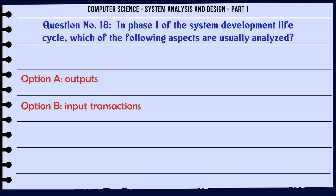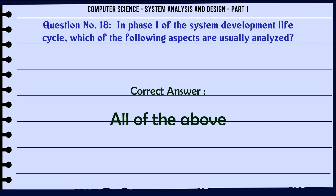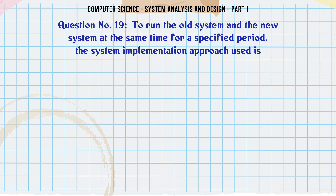In phase 1 of the system development life cycle, which of the following aspects are usually analyzed? A. Outputs. B. Input transactions. C. Controls. D. All of the above. The correct answer is: All of the above.